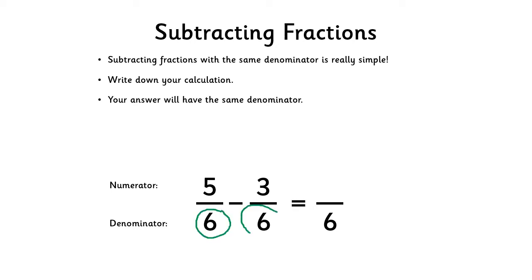If it has the same denominator, those fractions are like fractions and we simply write the same denominator in the answer. Find the difference between the numerators. Here, 5 minus 3 is 2.